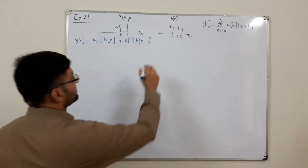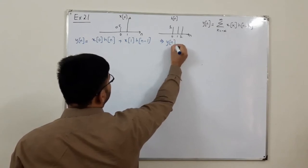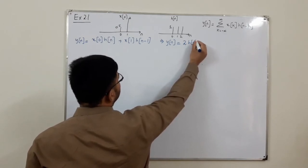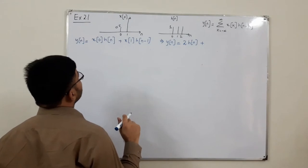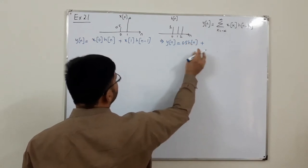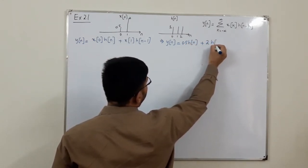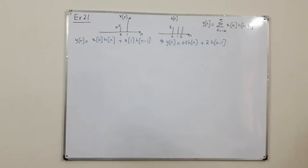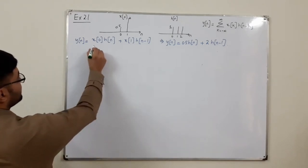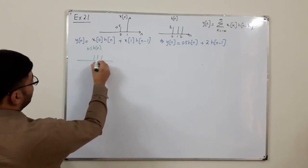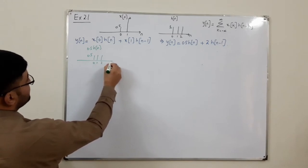So your y of n equals x of 0 times h of n minus 0, which is h of n, plus x of 1 times h of n minus 1. Putting the values: x of 0 is 0.5, so it is 0.5 times h of n, plus x of 1 is 2, giving 2 times h of n minus 1. So 0.5 times h of n has values 0.5 at n equals 0, 1, and 2.